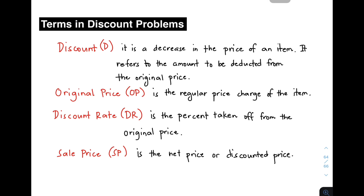Let's start with discount. The word discount is a decrease in the price of an item — it refers to the amount to be deducted from the original price. In other words, it's the amount that will be subtracted from the original price. Next, we have the second term: original price, represented by OP. Original price is the regular price charged for the item.